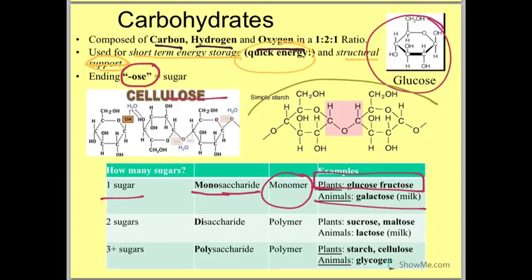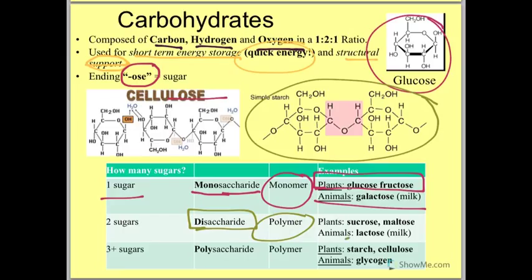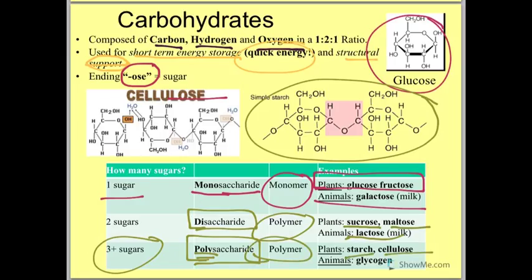When we have two molecules of sugar together, we call that a disaccharide — di meaning two, saccharide meaning sugar. We call this a polymer — something that has more than one of the original unit joined together, starting to make a longer chain. Disaccharides include sucrose and maltose, and we can find lactose in milk. More than three sugars, we're going to call it a polysaccharide — poly meaning many. These are also polymers, and things like starch and cellulose, which are difficult to digest, can be found in plants. Glycogen can be found in animals.